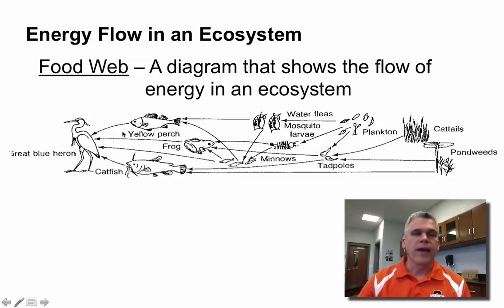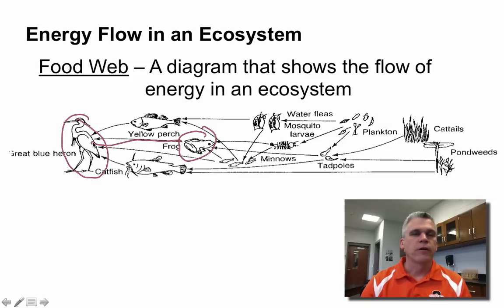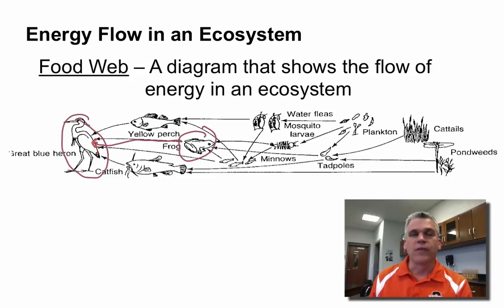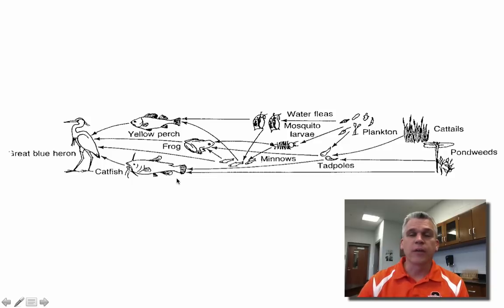So for instance, if we look at the great blue heron and the frog, we see the arrow going from the frog to the heron, which indicates that the heron ate the frog. So the energy is going from the frog to the heron. If we take a closer look at this food web, we can see that most organisms have arrows going to them, so we can see where their energy is coming from.